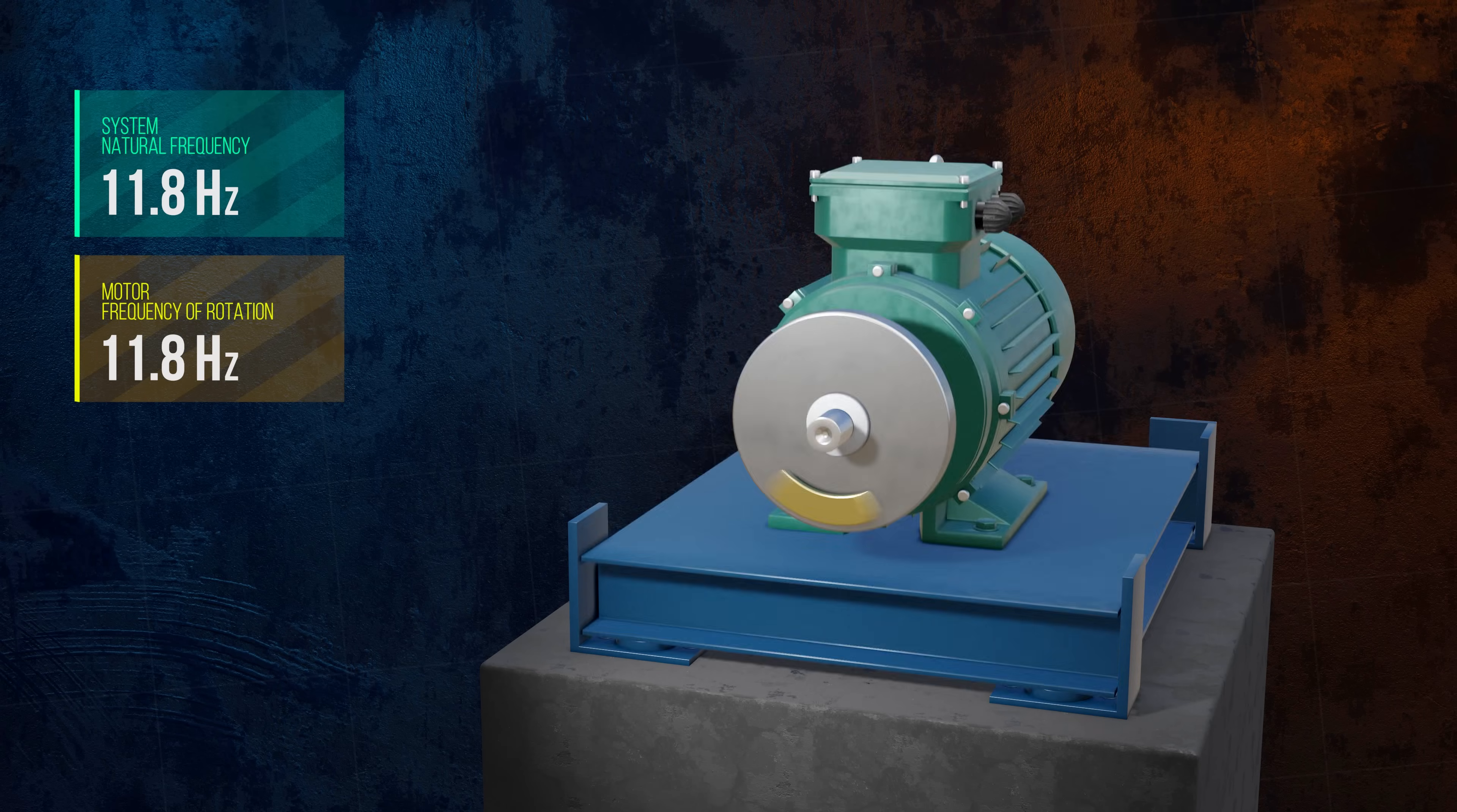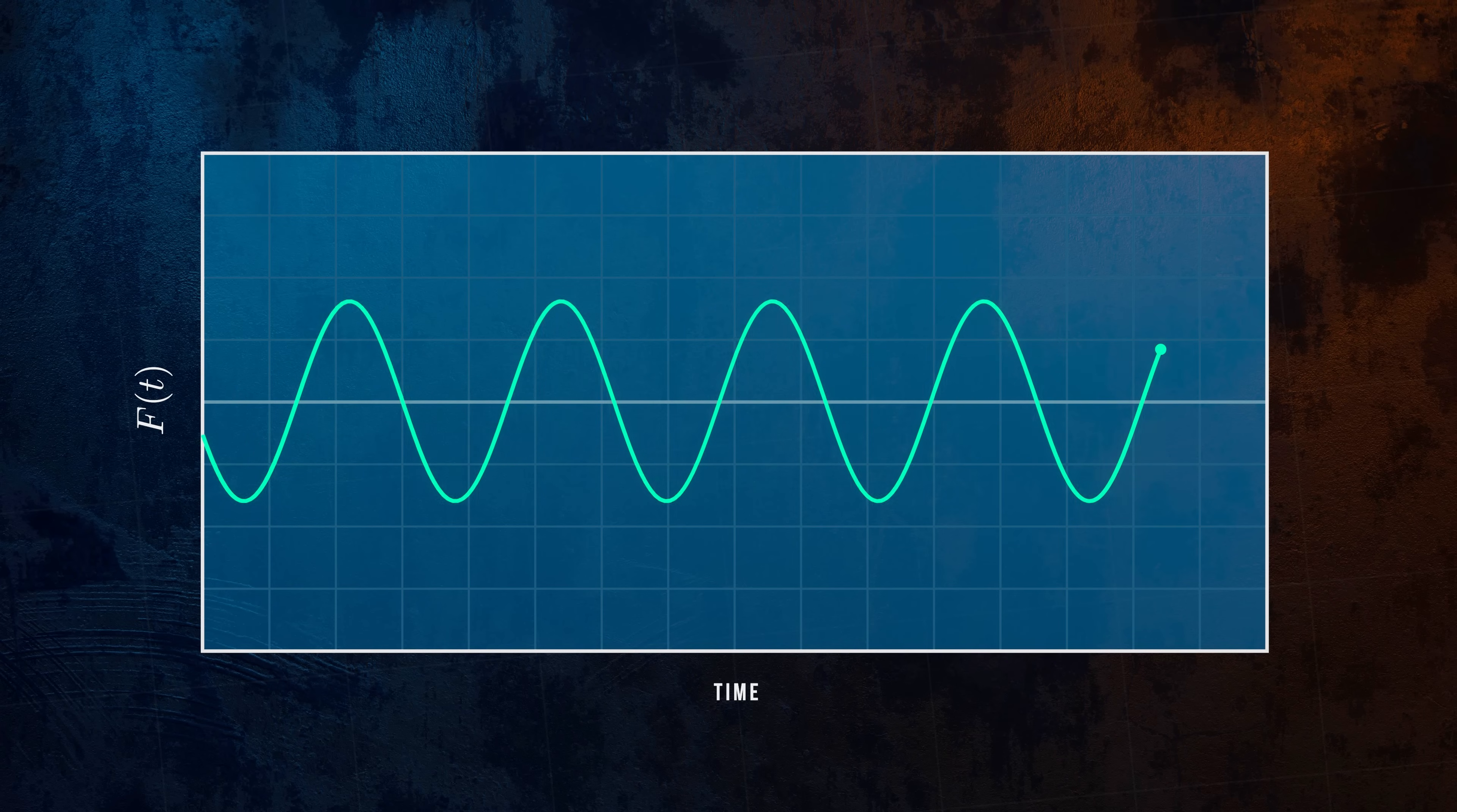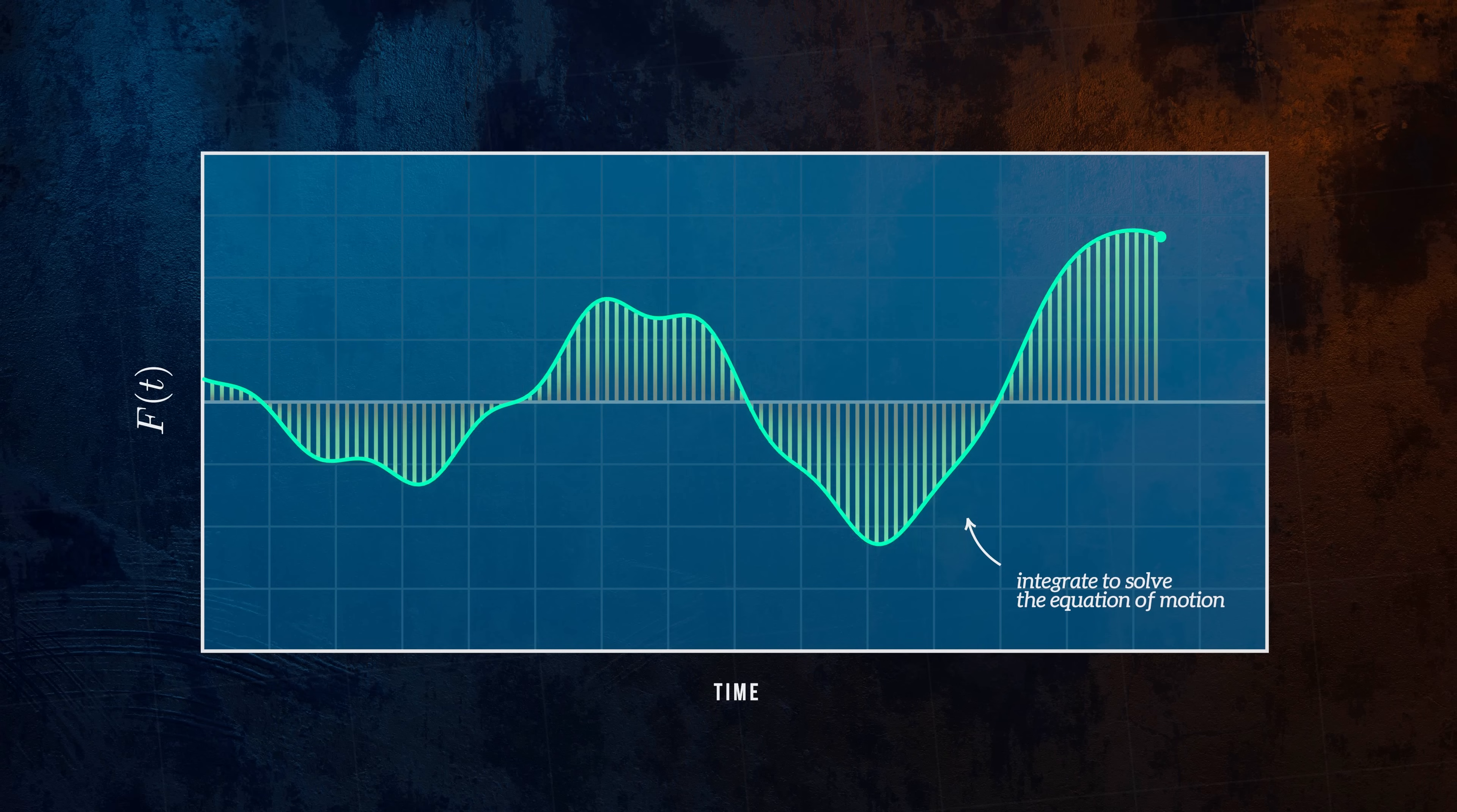With a rotating eccentric mass, the external force acting on the system is a simple sine wave function. This makes it easy to solve the equation of motion, since we can obtain a neat closed form solution. But if the loading is defined by a complicated function or is completely arbitrary, which might be the case if it's based on test data, it might not be possible to solve the equation of motion directly, and numerical integration methods will have to be used instead.